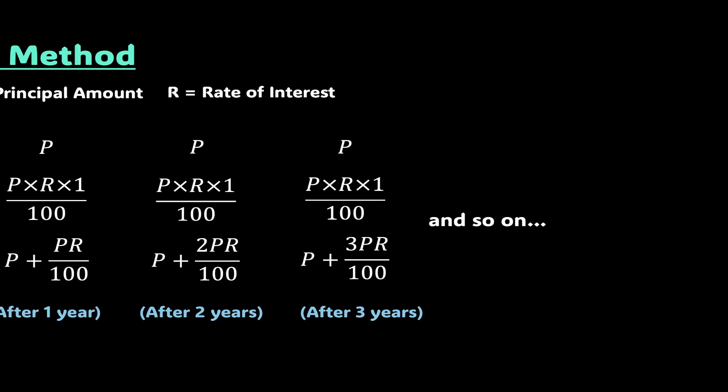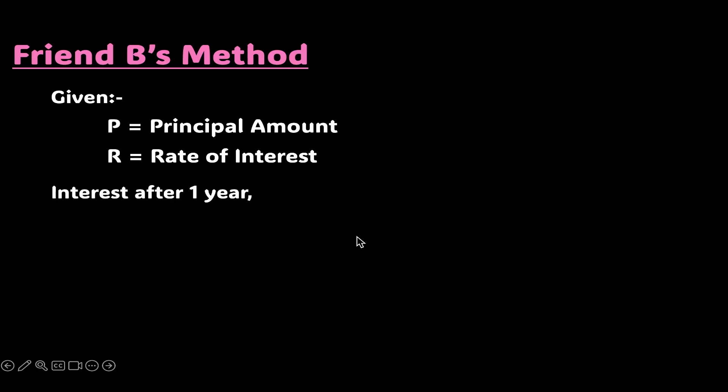To begin with, we have the principal amount as P and rate of interest as R percent per annum. Let us calculate the amount received after year one. So the interest after one year will be P times R times 1 upon 100. Let us denote it by I1. I1 basically means interest after year one. Simplifying this, we will get PR upon 100.